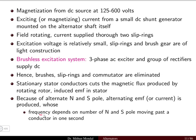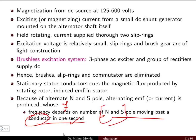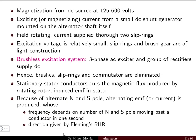The frequency of the induced EMF depends on the north and south poles moving past a conductor per second. The direction of the induced EMF is determined by Fleming's right-hand rule, which is used to find the direction of induced EMF in the case of a generator.